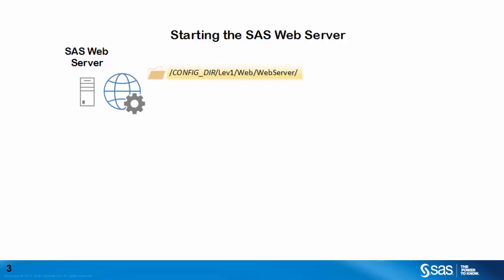The configuration files for the SAS web server are located in your SAS configuration directory under web and web server. Within the web server directory is a separate subdirectory called conf. Inside the conf directory is the main SAS web server configuration file called httpd.conf. Within the httpd.conf file is an include statement that enables us to include further configuration files. This allows us to logically split the configuration up into separate files. The main SAS configuration for the SAS web server is also located in the conf directory and is called sas.conf.